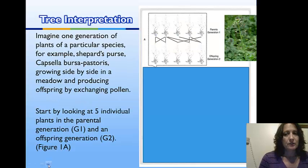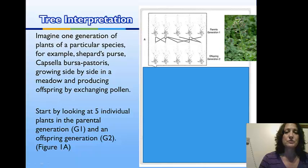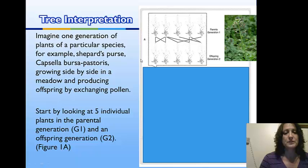In order to understand a tree, I want to start by showing you what a branch on a tree truly represents. We're going to look at these species of shepherd's purse, looking at five individuals within the parent generation. We're looking at these lines that represent cross-pollination — an exchange of pollen between individuals — and then we get these offspring.